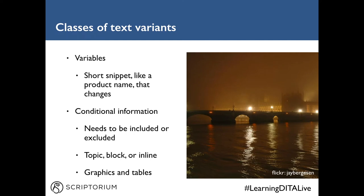If you're familiar with setting up text variants in a desktop publishing environment, you've probably seen two ways of accomplishing that: variables and conditions. Variables are a short snippet — such as the name of a product or feature — that might need to change over time. DITA does not have variables per se, but instead uses key references to accomplish something very similar. This is a different reuse mechanism from conditions, which are primarily used for filtering — when you have information that needs to be included or excluded from your final publication.